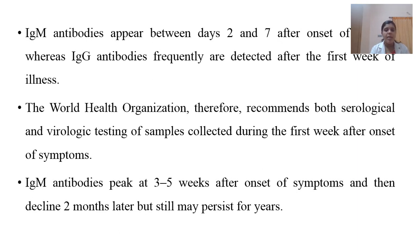IgM antibodies will usually peak at three to five weeks after the onset of symptoms, and they may start to decline two months later, but they can persist in the blood for many years.